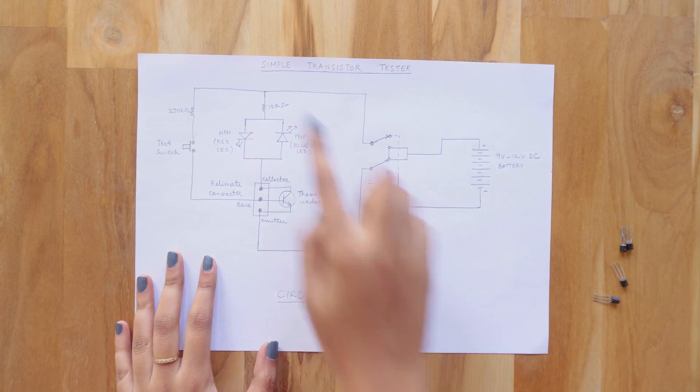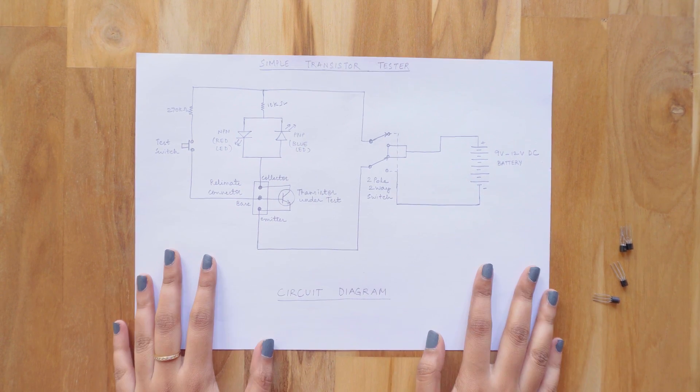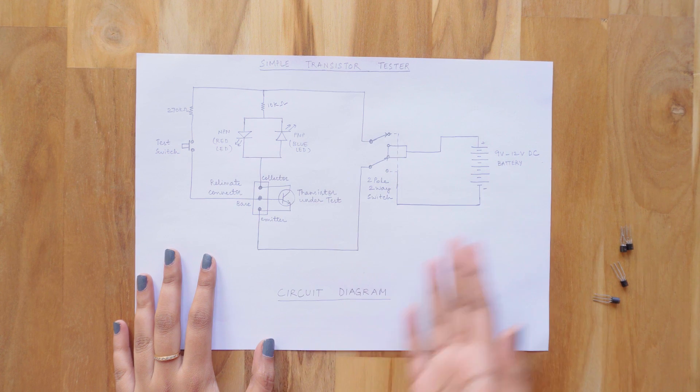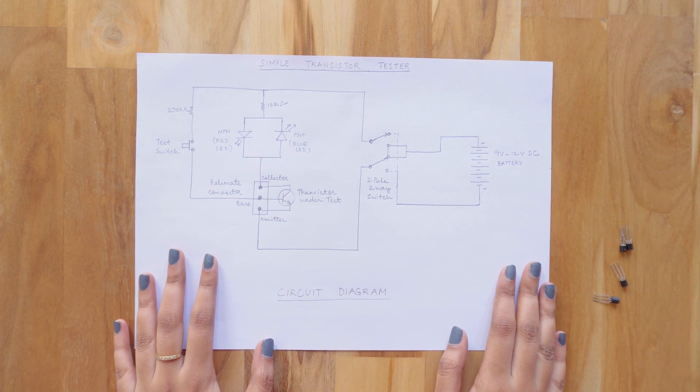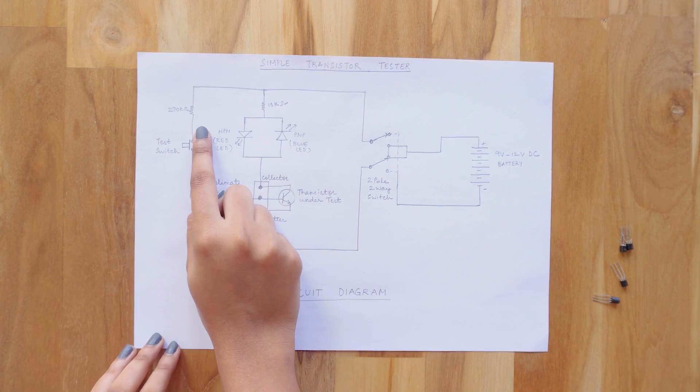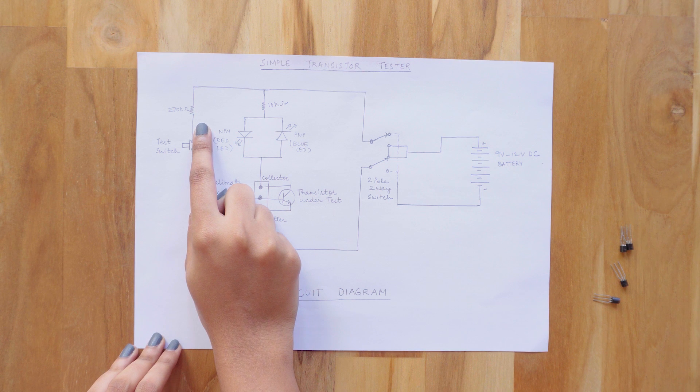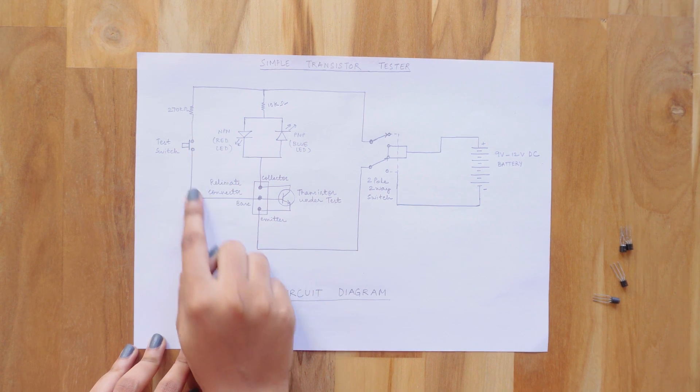This is the circuit diagram of the simple transistor tester that I have made. You can see it's very easy and it has only few components. Here I have used a 270K resistor which acts as a biasing resistor to the transistor.